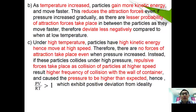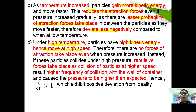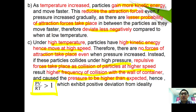As temperature increases, particles gain more kinetic energy and move faster, reducing attraction forces, so they deviate less negatively compared to low temperature. At very high temperature, high kinetic energy and high speed eliminate attraction forces entirely. Instead, particles collide at very high pressure with repulsive forces and higher collision frequency with the container wall, so pressure is higher than expected — pV/RT is greater than 1 — exhibiting positive deviation from ideal behavior.